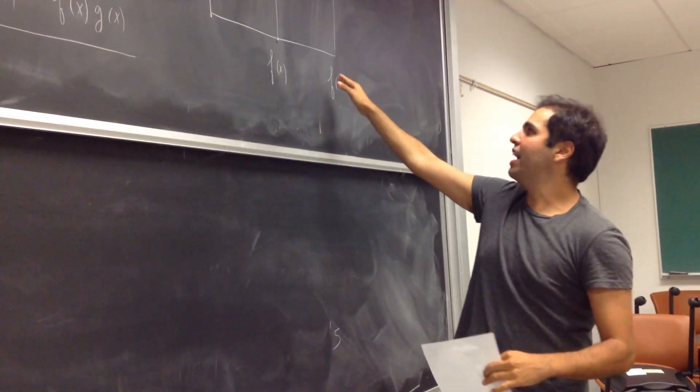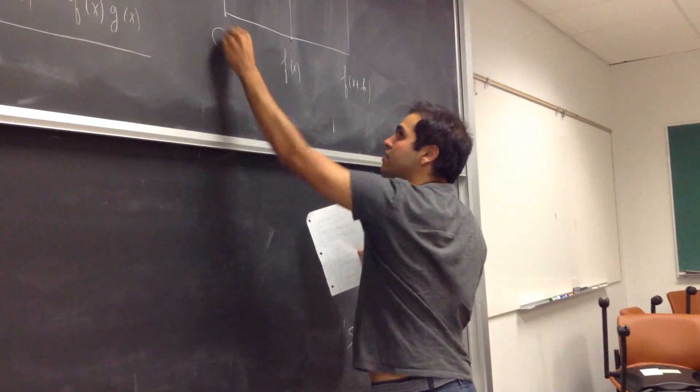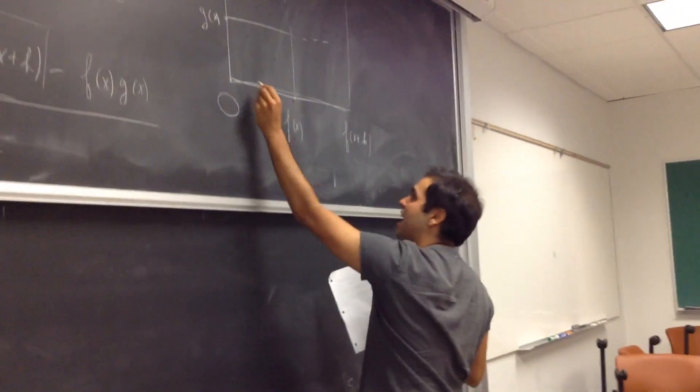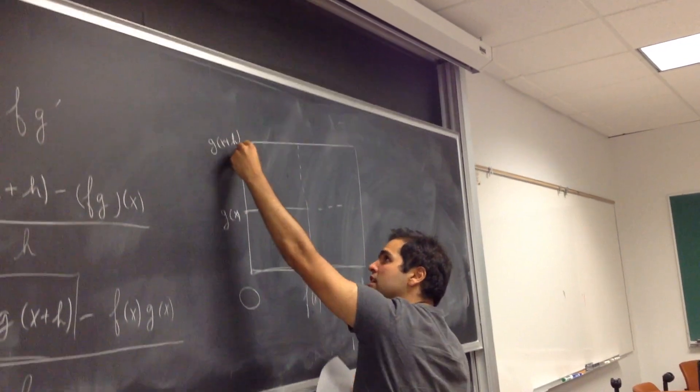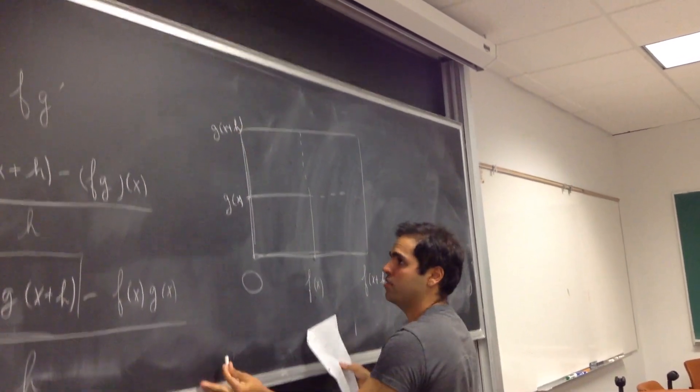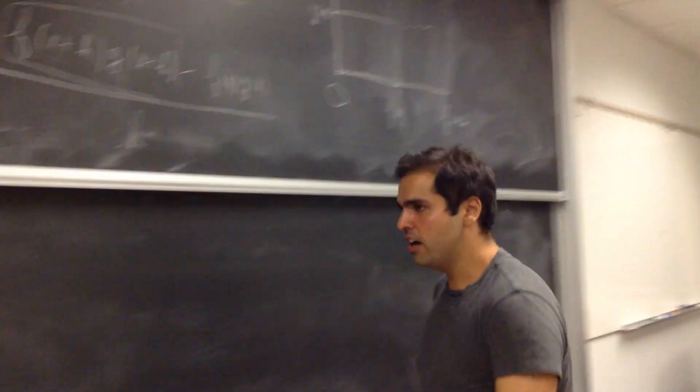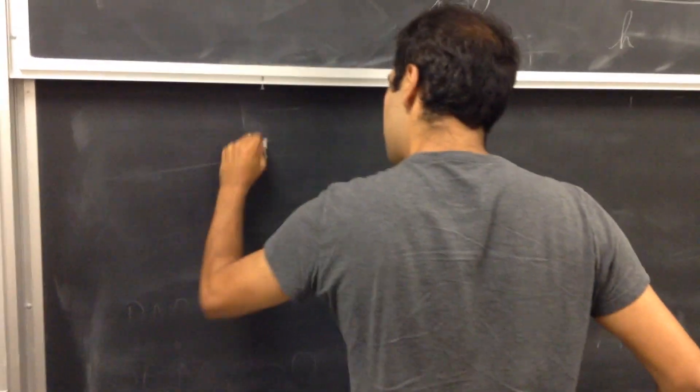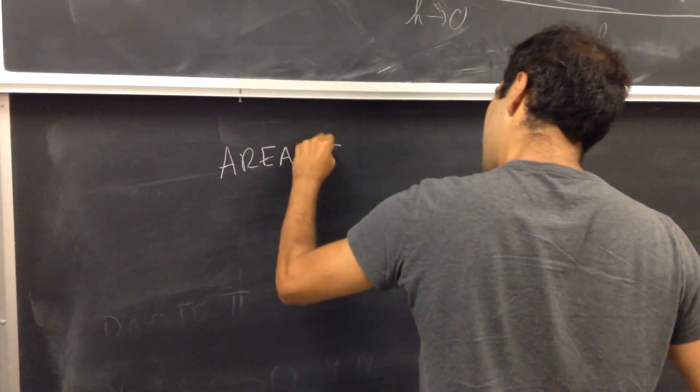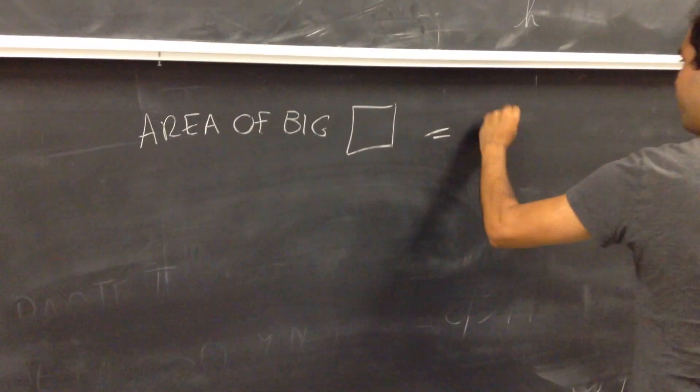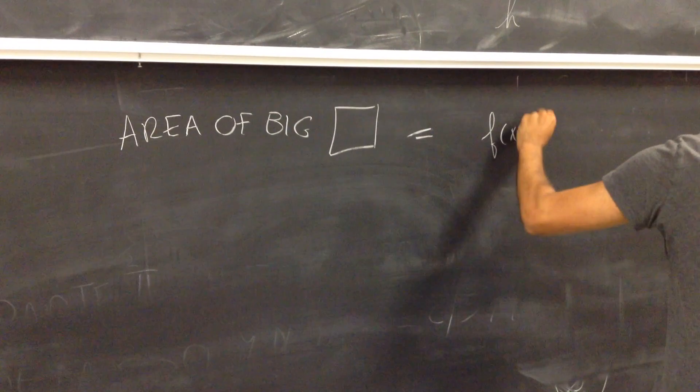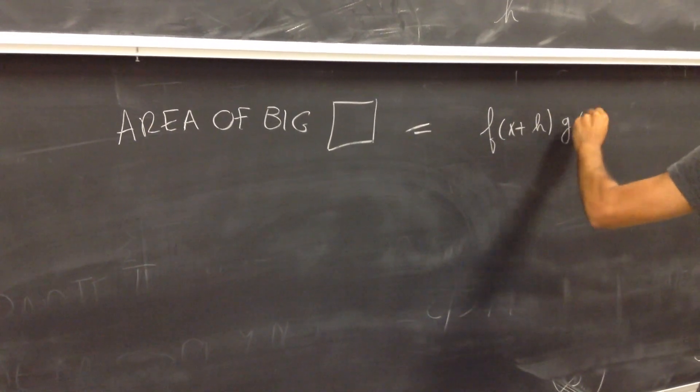Notice the following: the area of the big rectangle - the base is f of x plus h, but the height is g of x plus h. So the area of the big rectangle is equal to f of x plus h times g of x plus h.